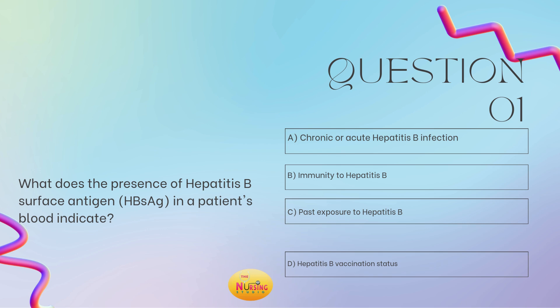Here, the stem is the question — the question is the stem. So when it asks you about the hepatitis B surface antigen, I am big on y'all understanding these key points. A lot of people run into this hiccup, so I wanted to slow this down to build the knowledge for you guys. The surface antigen, if it is positive, what does this indicate? The answer is A, chronic or acute hepatitis B infection. If this is positive, you know they have the infection.